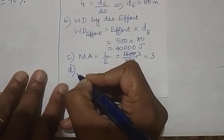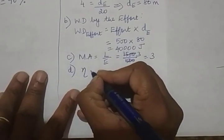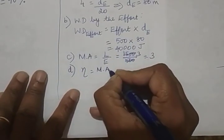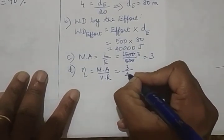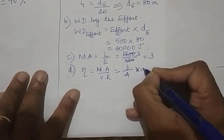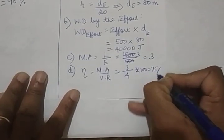D part. Efficiency of the pulley system. Efficiency is MA upon VR. So 3 by 4 into 100. That will be 75 percentage.